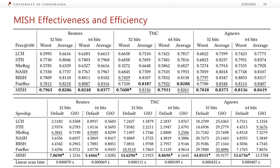Looking at effectiveness, MISH achieves state-of-the-art performance, performing better or similar to the baselines on both worst and average case precision at 100 for both 32 and 64 bit codes across all three datasets. We especially see that the worst-case performance is slightly better than the baselines, which is a consequence of the two additional losses distributing the hash codes more uniformly in the space. Since MISH uses the same semantic encoder as PAIREC, we would expect very similar performance, which we also observe.